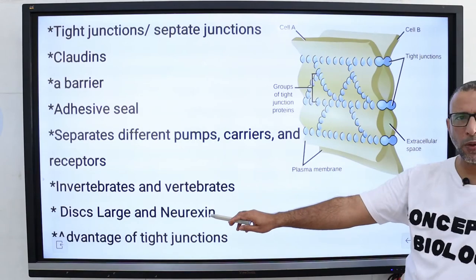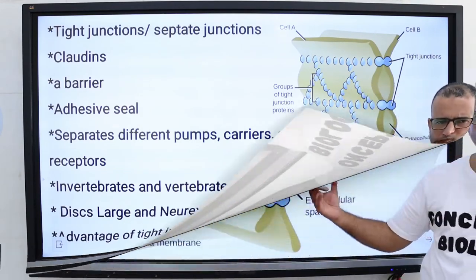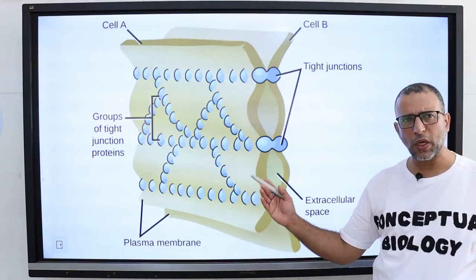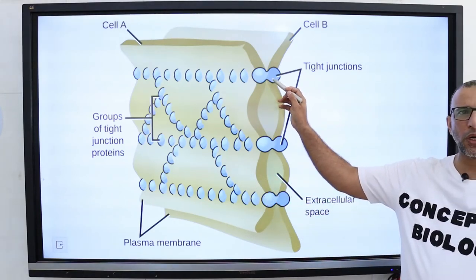In Drosophila, the proteins include discs large and neurexin. Tight junctions are unique to vertebrates and contain a protein called claudins.